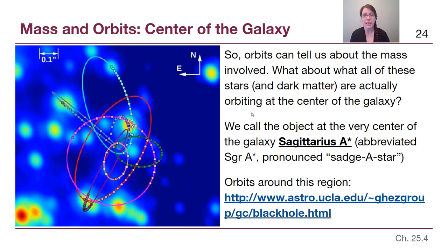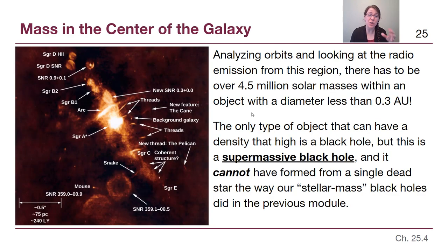And each of those independent measurements is telling us that that object has over four and a half million solar masses of material. It is still a tiny fraction of the overall mass of the galaxy, 4 million compared to 400 billion solar masses.